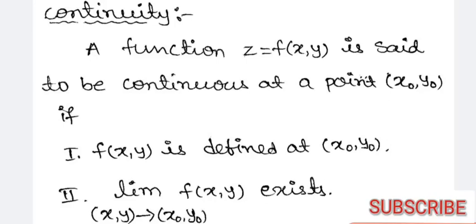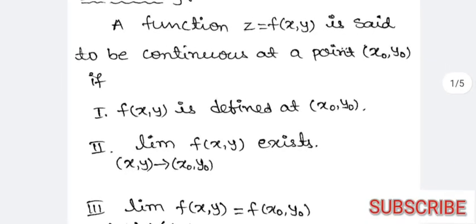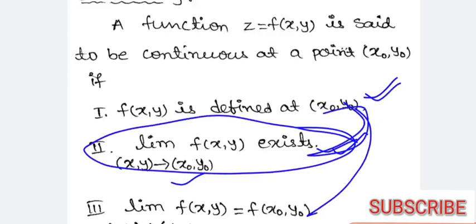See the definition of continuity. A function z = f(x, y) is said to be continuous at a point (x₀, y₀) if three conditions are satisfied. First, f(x, y) is defined at (x₀, y₀). Second, the limit as (x, y) → (x₀, y₀) of f(x, y) exists. Third, both are equal. If these three conditions are satisfied, then the function is said to be continuous.